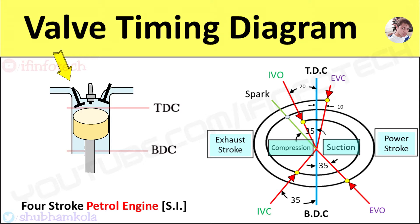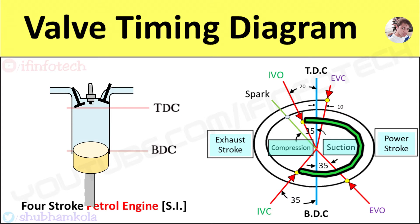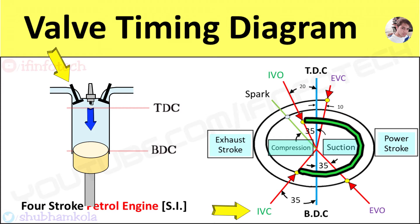The inlet valve opens 20 degrees before the TDC position of the piston, and during the suction stroke, pressure inside the cylinder will be atmospheric pressure. But when the piston moves from TDC to BDC, volume increases and this creates a pressure difference inside the engine cylinder. Due to this pressure difference, the petrol and air mixture will enter into the engine cylinder and fill it completely with charge. The inlet valve closes at an angle of 35 degrees after the BDC position of the piston.